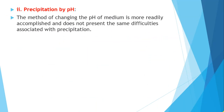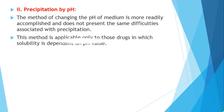The second precipitation method is precipitation by changing the pH of the medium. This method is more rarely accomplished and does not present the same difficulties seen in organic solvent precipitation — such as the temperature and drying conditions that must be maintained. Those types of problems do not arise here.